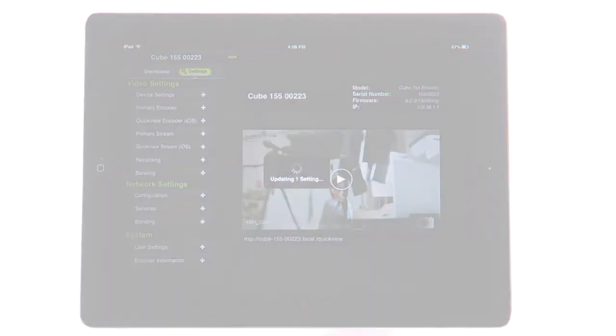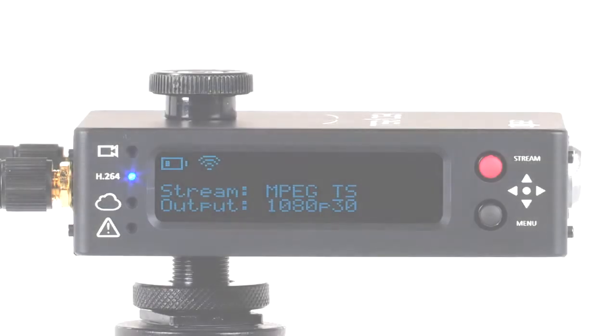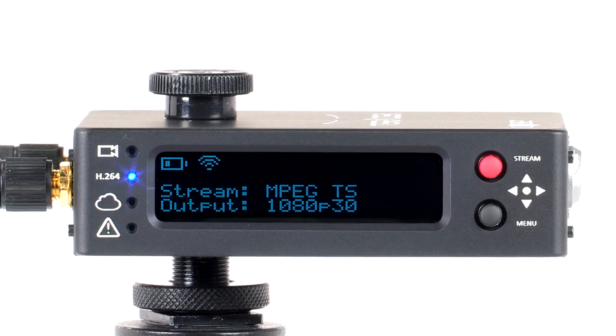Now at point B, we will show you how to receive the feed on a cube decoder and Apple computer. We recommend a hard-lined ethernet cable, but you can also connect via Wi-Fi. You will need to identify the decoder's assigned private IP address.